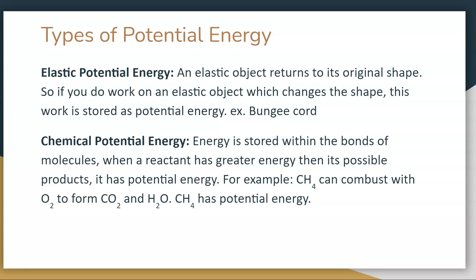Elastic potential energy is something new. We didn't write this one down earlier, but we're going to write it down now. Elastic potential energy is an elastic object returning to its original shape. If you have an elastic object that changes shape, it stores potential energy. For example, a bungee cord. As it's sitting there, it's storing potential energy. It can be stretched and returned back to its original shape, showing the type of potential energy that happens when that bungee cord stretches and then goes back.